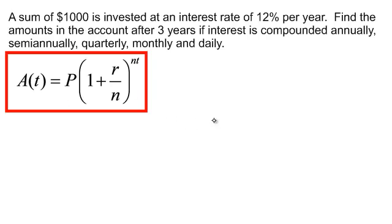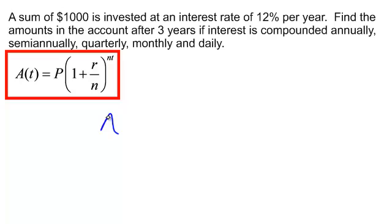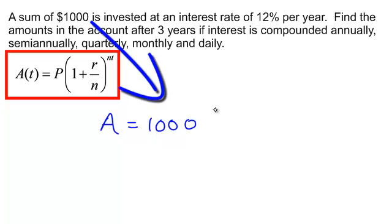So I have my formula in front of me and I am trying to figure out how much money I will have in the account. If I invest $1,000, my principal will be 1,000 times 1 plus.